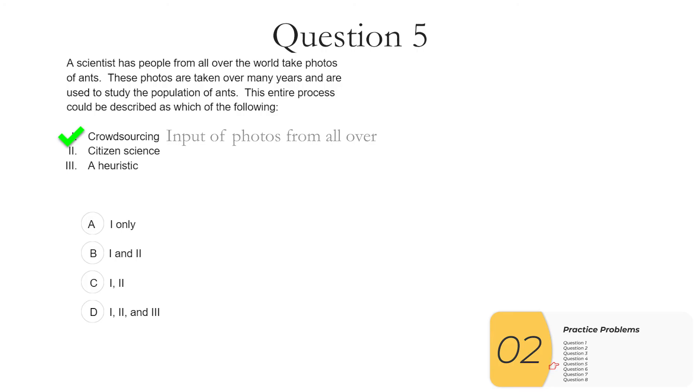Two, citizen science. This is definitely a canonical example of citizen science. You have a scientist who's running the whole thing, getting data from regular people from all over the world over many years in locations that the scientist would never be able to get to themselves. When you think of citizen science, you think of something just like this. So two is definitely true.